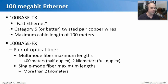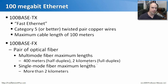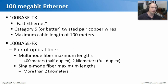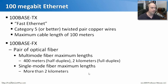100Base-FX used a pair of optical fiber that could be either multimode or single mode. Multimode fiber allowed up to 400 meters at half duplex, but almost everybody runs full duplex over these connections, which means over multimode fiber we can go up to two kilometers. If you need to go even further, put it on single mode fiber — you can go more than two kilometers with 100 megabit running at full duplex.